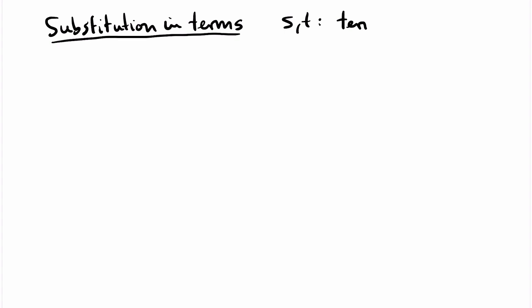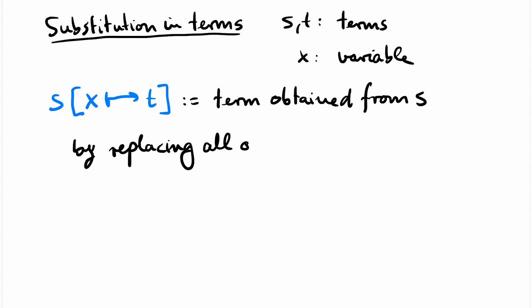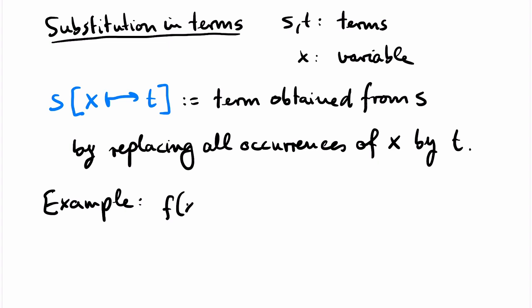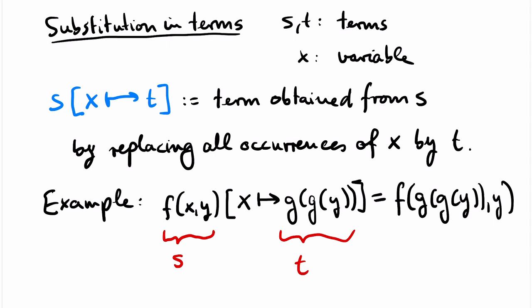To specify the next axiom we need the concept of substitution. Let s and t be τ-terms and let x be a variable. We write s[x ↦ t] for the term obtained from s by replacing all free occurrences of x by t. For example, f(x,y)[x ↦ g(g(y))] yields the term f(g(g(y)), y). Note there are many variations of this notation in the literature — almost every author has their own convention.